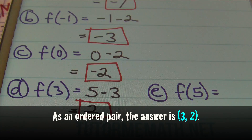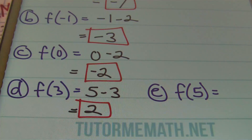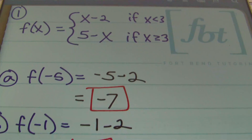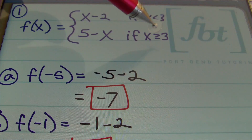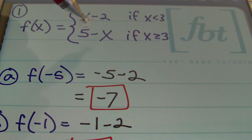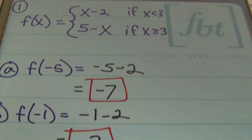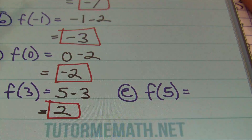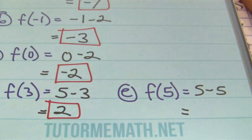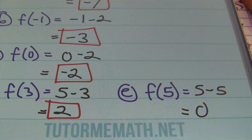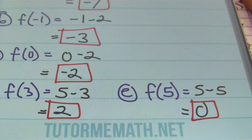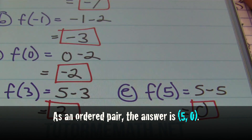For part e, x equals five. Five is greater than or equal to three, so we use the second part of the function: five minus x. Replacing x with five gives five minus five, which simplifies to zero. That completes problem number one.